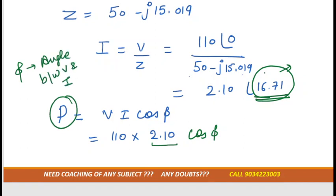The angle between voltage and current is 16.71. At this point we don't need to take angle, we are taking angle in this term cos phi. So after solving this we'll get 221.96 watt.